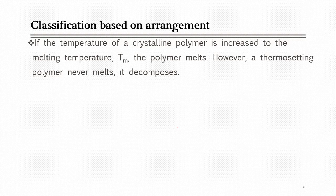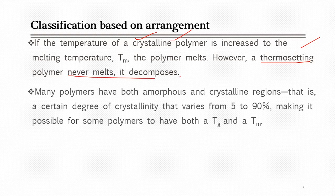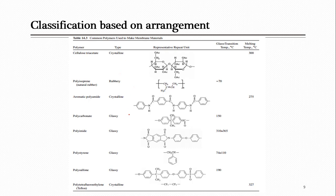Crystalline polymers have a property called melting temperature (Tm) — when you increase their temperature you reach a point where they melt, and then they can be reused for synthesizing products. This is valid only for thermoplastic crystalline polymers; thermosetting polymers will decompose. Most available polymers are not purely amorphous or purely crystalline — they contain some portion of amorphous and some crystalline, so they have both Tg and Tm.